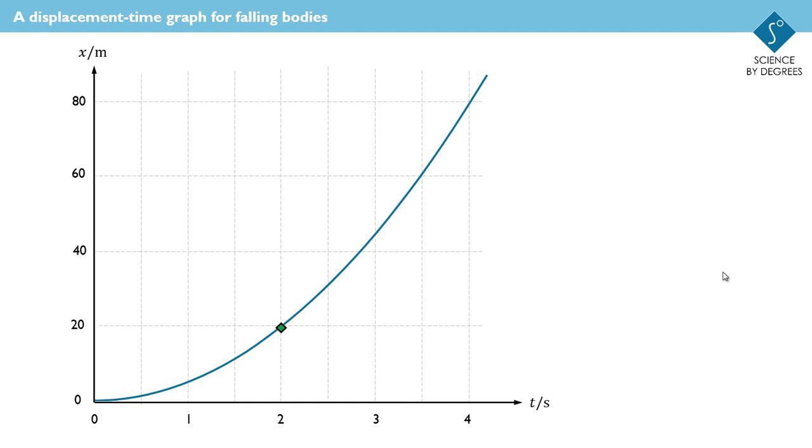To do that we need to find the gradient not of part of the curve, because it's a curve, but of the tangent to the curve, which is shown in black. We'd get a change in displacement and a change in time, divide one by the other to find the gradient.